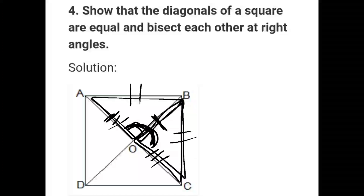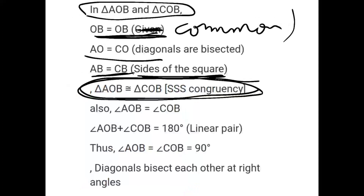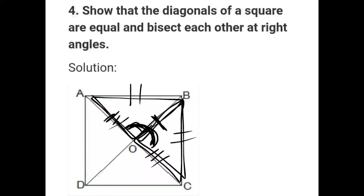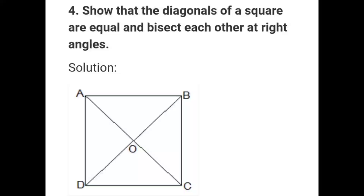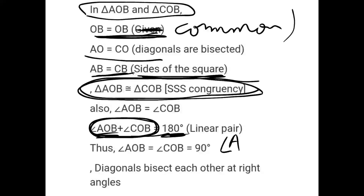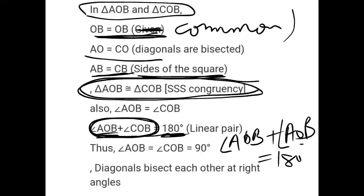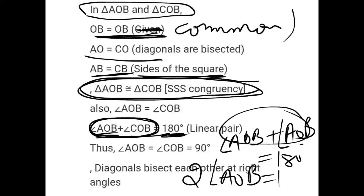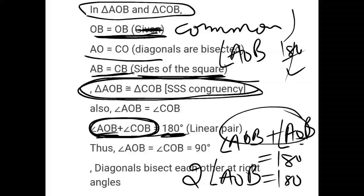Both angles are equal. So angle AOB plus angle AOB equals 180 degrees. Since two angles are equal and add up to 180 degrees, angle AOB equals 180 divided by 2, which equals 90 degrees. This means the diagonals bisect each other at 90 degrees — at right angles.